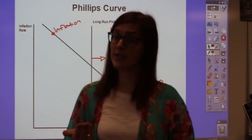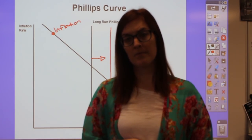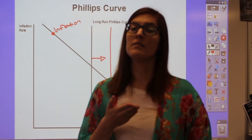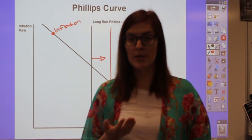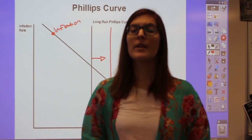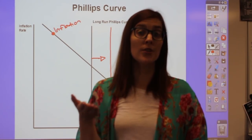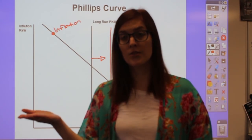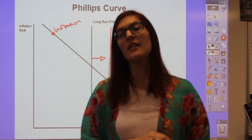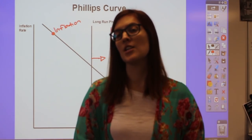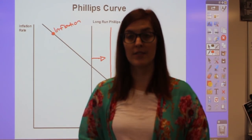Conversely, if the government decreases unemployment compensation, either people get off unemployment and find jobs—no longer counted as unemployed—or they stop qualifying and become discouraged workers, who also don't count in the labor force. Either way, the natural rate of unemployment falls, shifting the long run Phillips curve to the left. So unemployment compensation and the long run Phillips curve have a direct relationship.